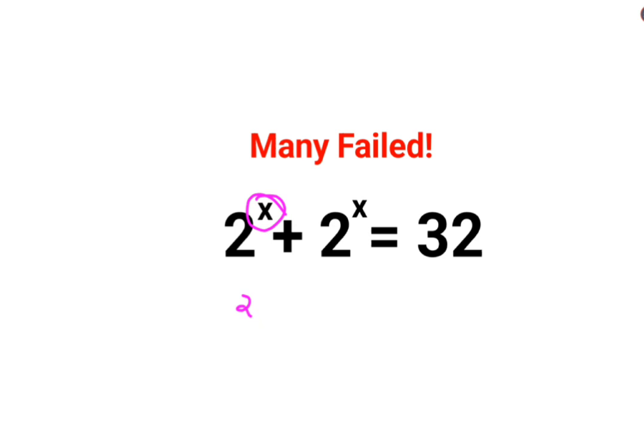2 times 2 raised to X, right, equals to 32. Now in order to find the value of X, we will divide both sides by 2. So this is canceling, I'm left with 2 raised to X equals to 16.